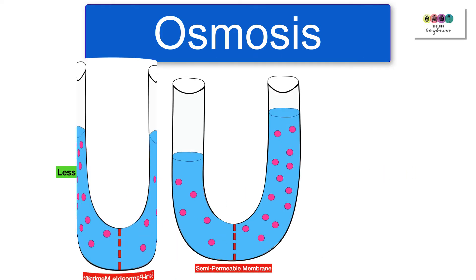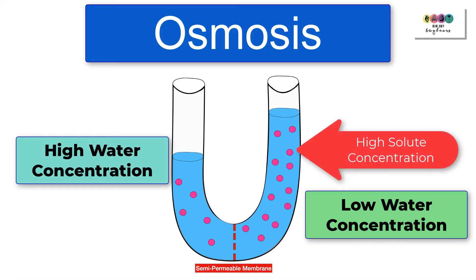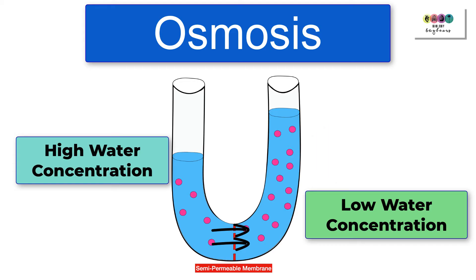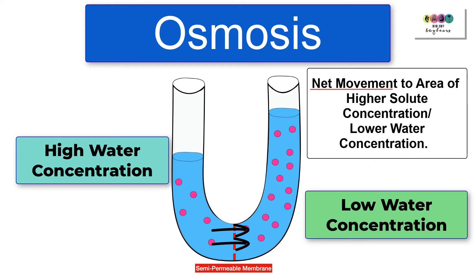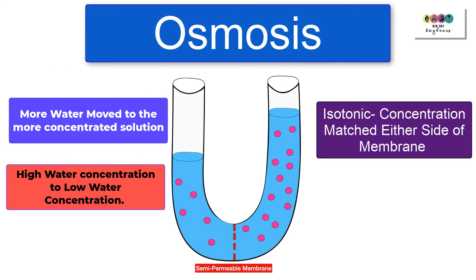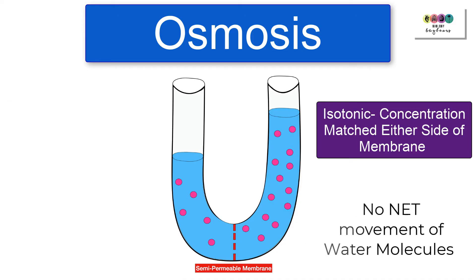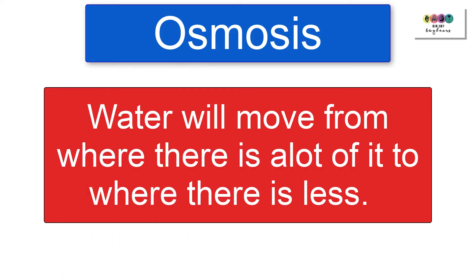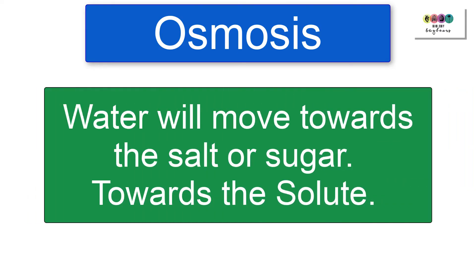Water rises on the right side — the side with high solute concentration and low water concentration. Water moved across the semi-permeable membrane from a region of high water concentration to a region of low water concentration. There is a net movement of water molecules towards the higher solute concentration until things are balanced either side of the membrane. If you're confused, just remember: water moves from where there's a lot of it to where there's less, or towards the salt or sugar — towards the solute.